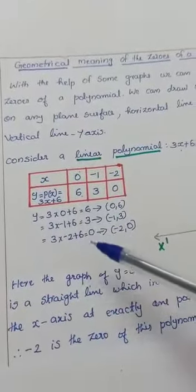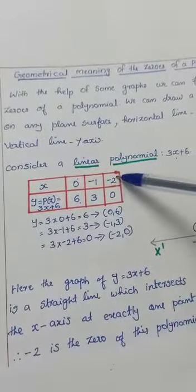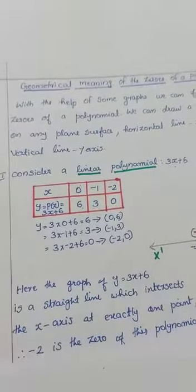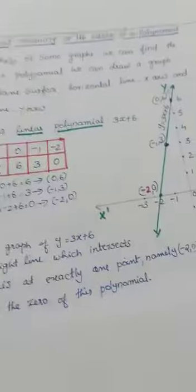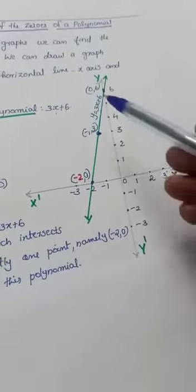When x equals negative 2, y equals 3 times negative 2 plus 6 equals 0. Plot these points on the graph. First we have to draw the x-axis and y-axis.